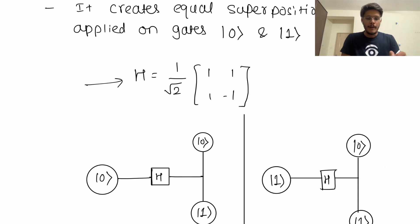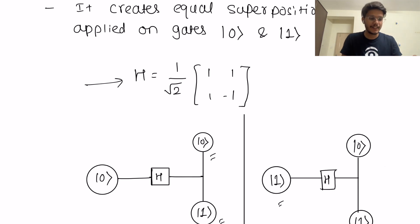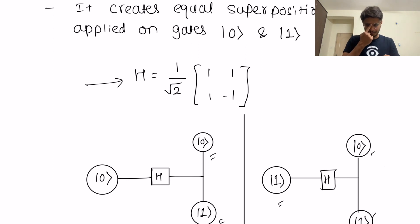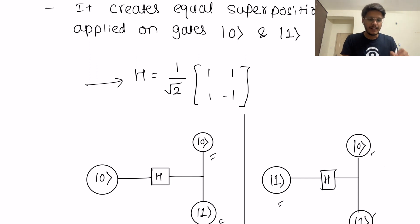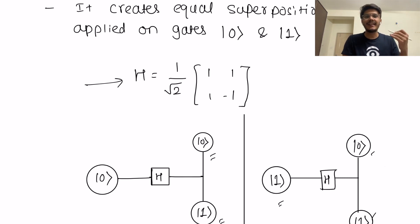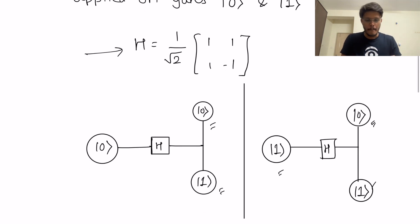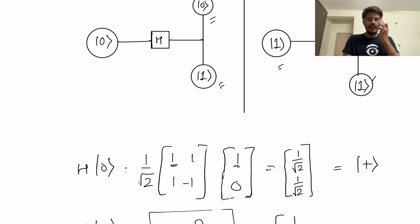As already explained, state |0⟩ will get transitioned into a combination of states |0⟩ and |1⟩ by applying the Hadamard gate. Similarly, state |1⟩ will get transitioned to states |0⟩ and |1⟩. So when applying the Hadamard gate to state |0⟩, it will be superpositioned into a state where it is simultaneously in state |0⟩ and state |1⟩. Similarly, applying the Hadamard gate on a qubit in state |1⟩ will transition it to state |0⟩ and state |1⟩ at the same time.